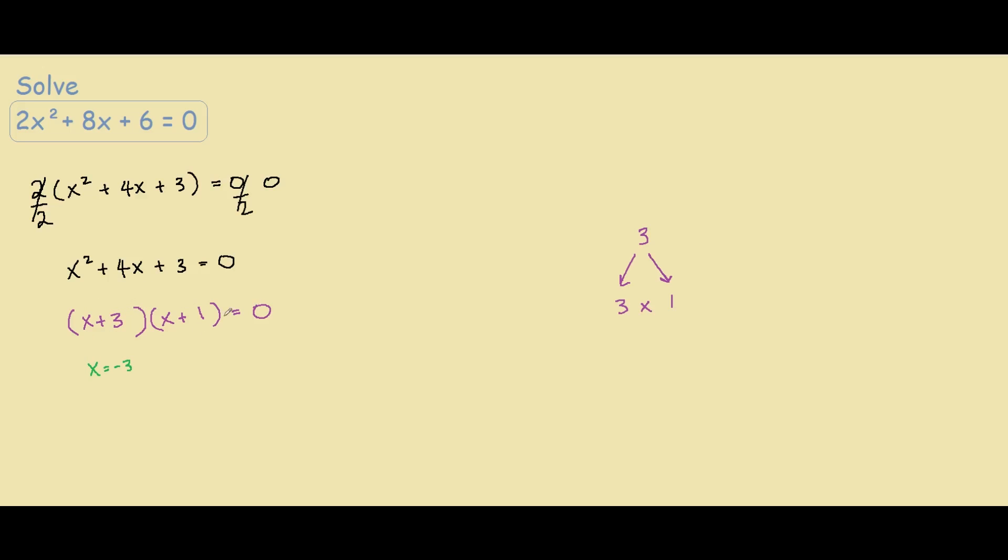And we also have x equals negative 1. Again, negative 1 plus 1 is 0. So 0 times anything equals 0.